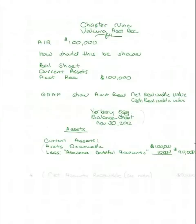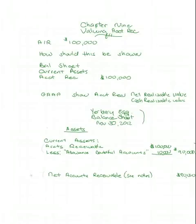A second acceptable way to show the accounts receivable would be to just show net accounts receivable at $90,000 and refer the reader to the notes to the financial statements. In the notes to the financial statement, you could give the details of the Allowance for Doubtful Accounts, and you would just show on the balance sheet the net realizable value. You would still have headings, it would still be an asset, it would still be a current asset. Showing it with full detail or just the net amount are both acceptable means of presenting on the financial statement.